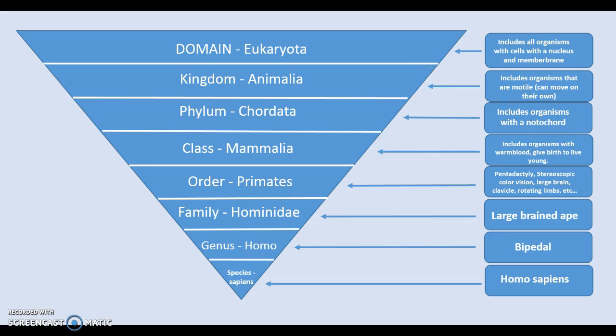So chordata, phylum chordata is actually further split down into further subgroups called classes. And in the case of humans, the class that we belong to is class mammalia. Now class mammalia includes all organisms with all chordates or all of the organisms that fall under chordata that have warm blood, give birth to live young, and actually nurture their young with their mammary glands. That's where the word mammalia comes from. So they give birth to their young and they nurture that young with their mammary glands, with warm milk from their mammary glands. So that's a subclass of chordata, mammalia.